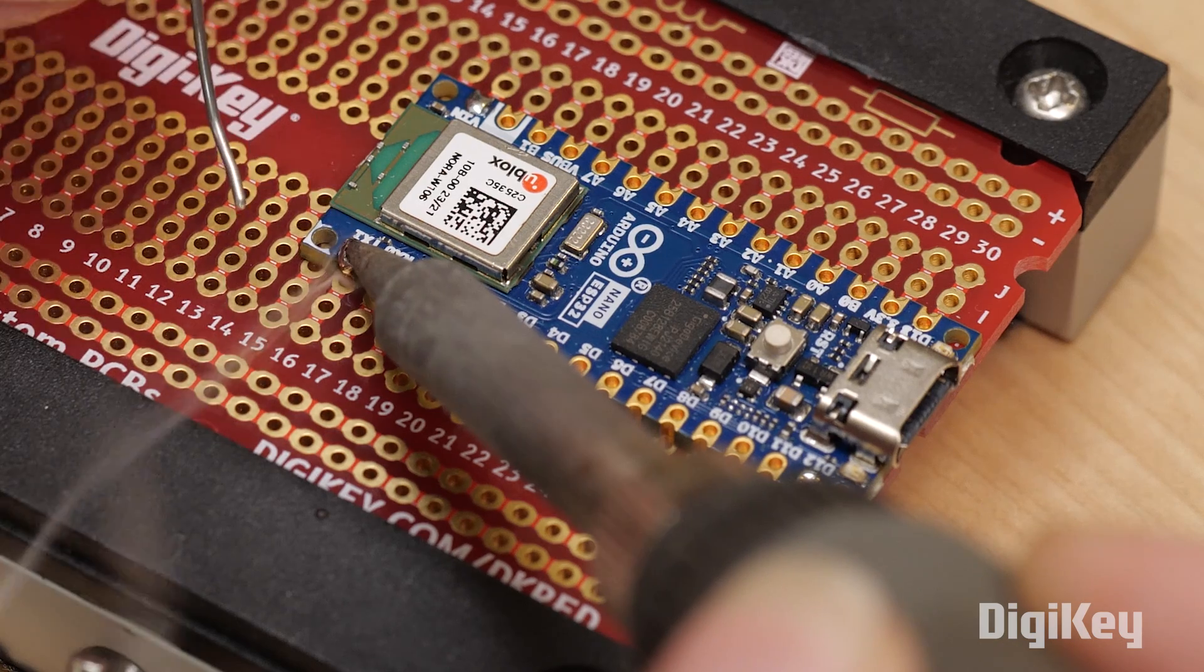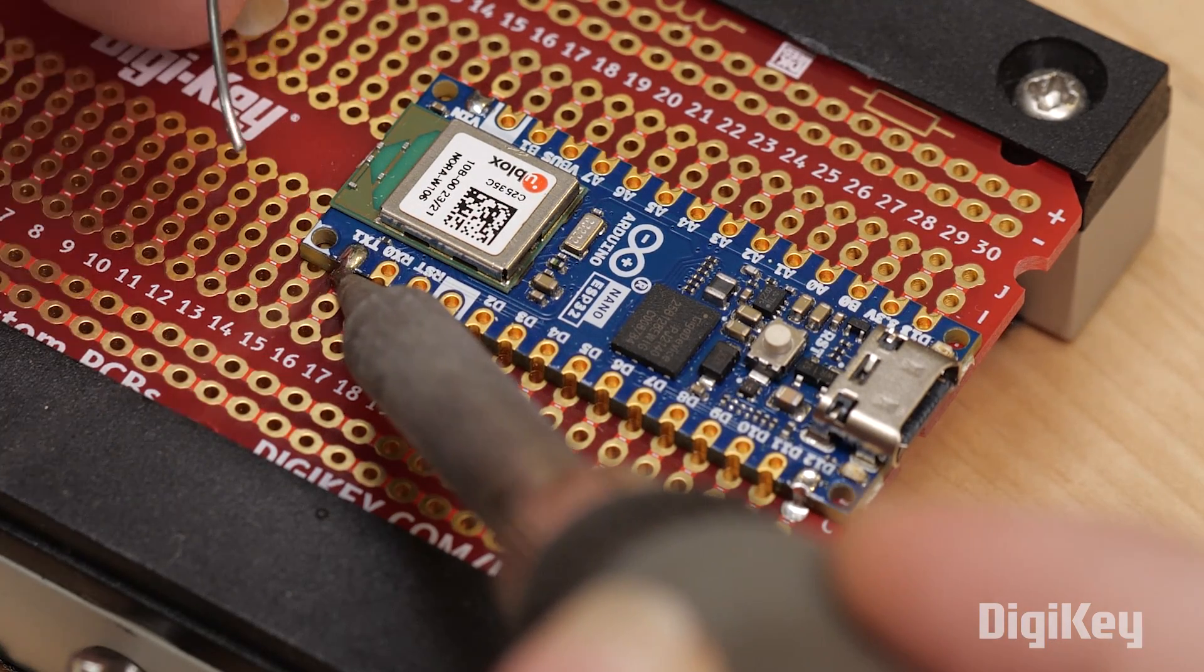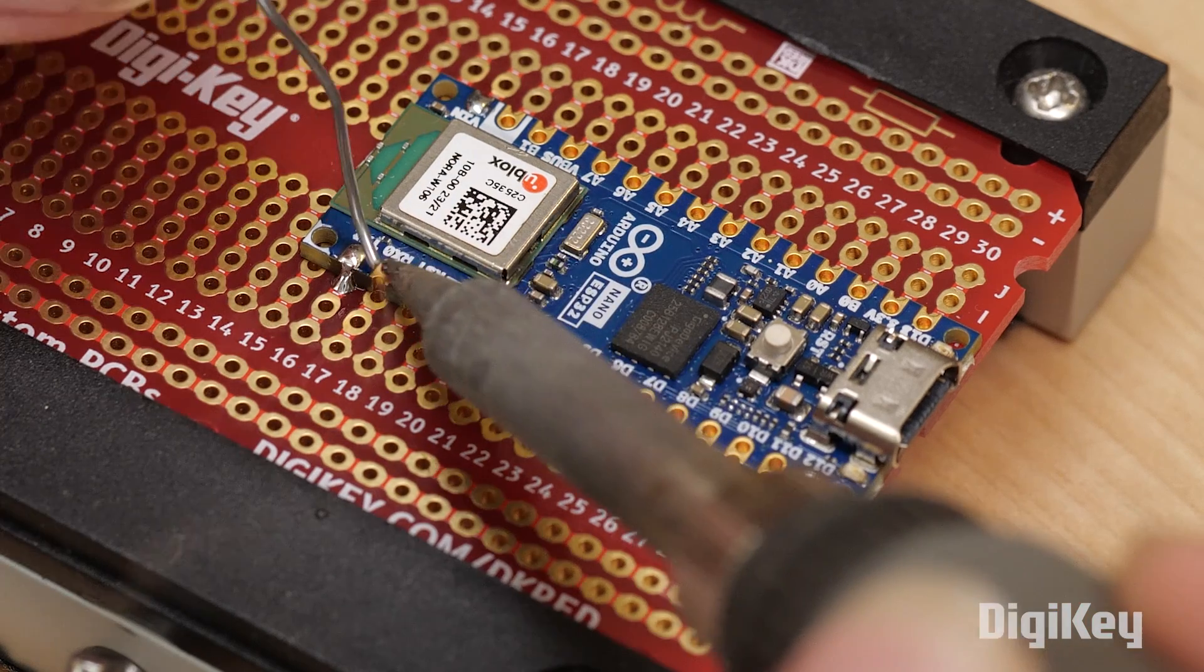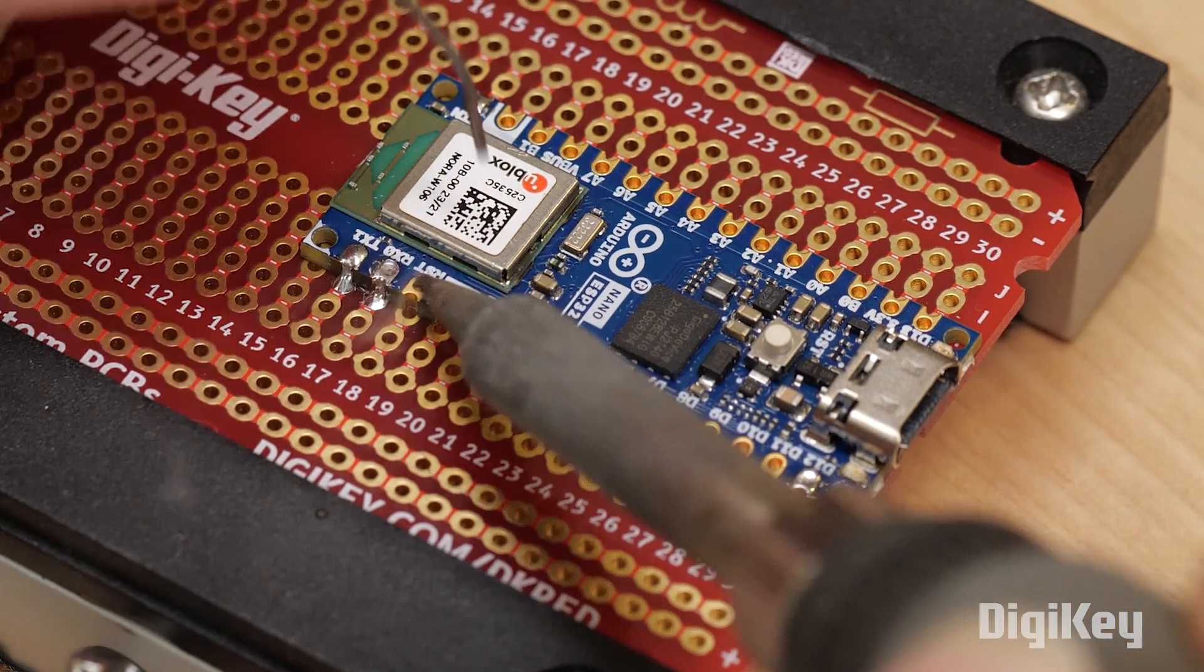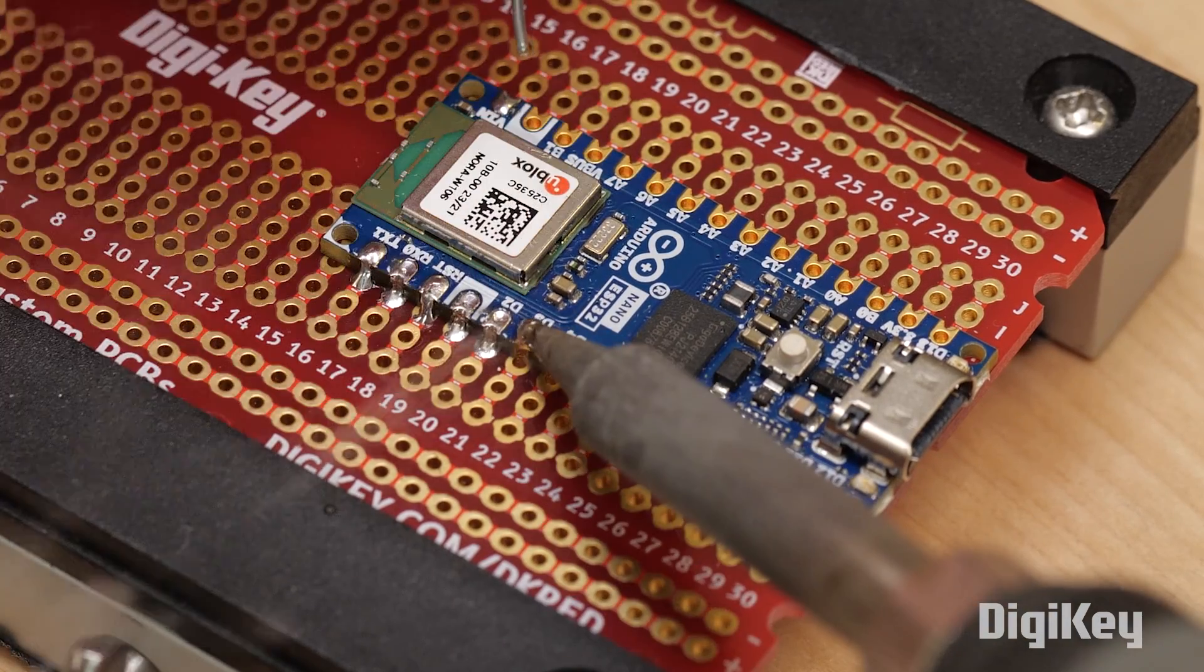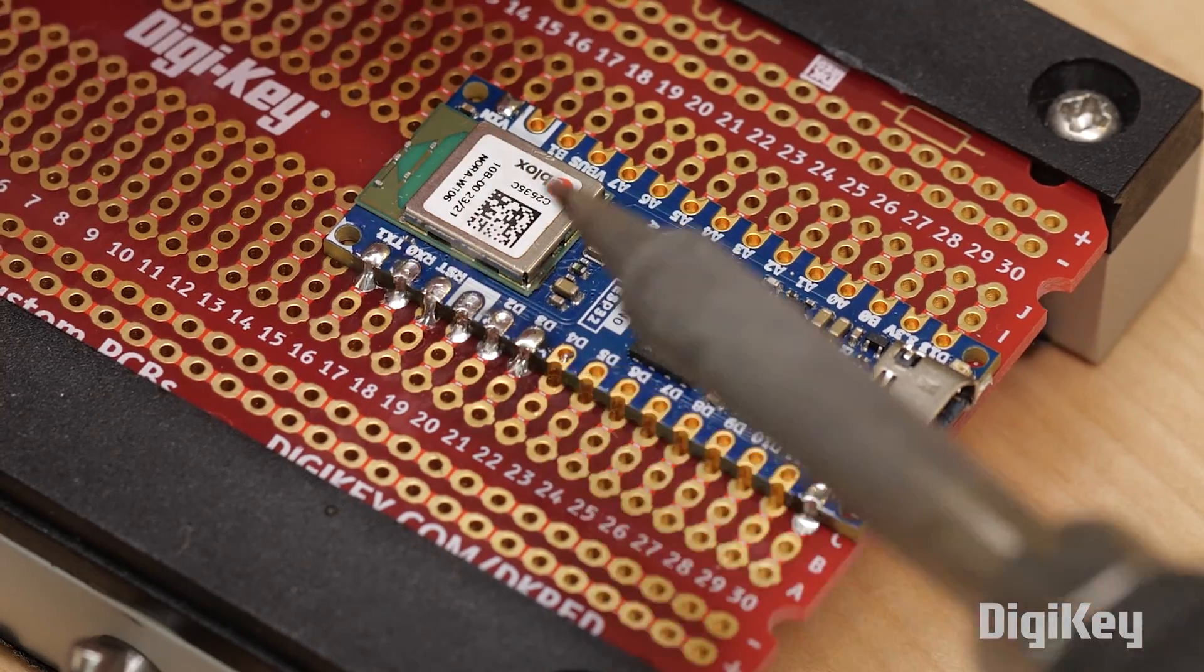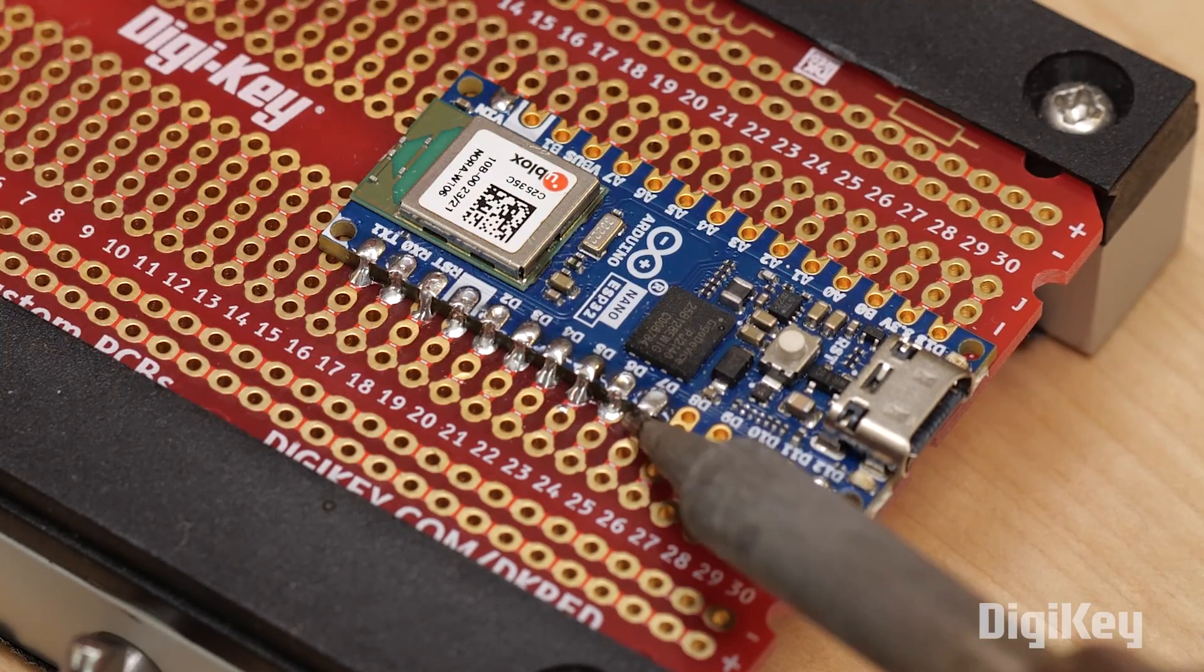I'm using the Arduino Nano ESP32 as the microcontroller brain of this project. It's got WiFi and Bluetooth crammed into a tiny footprint, supports both Arduino and MicroPython, and it's compatible with the Arduino IoT Cloud. I like that it has castellated pins so I can solder it directly to a breadboard and keep my circuit profile as low as possible.